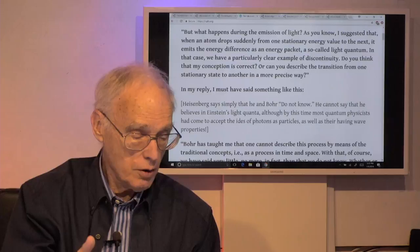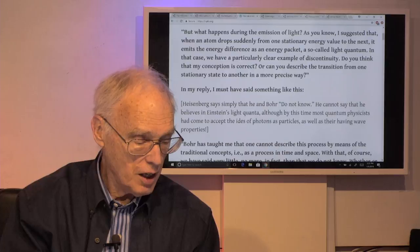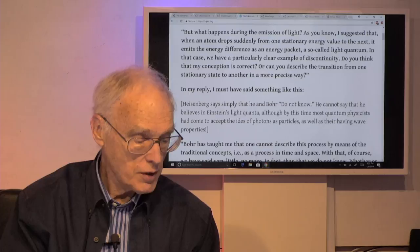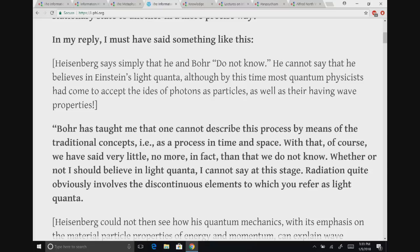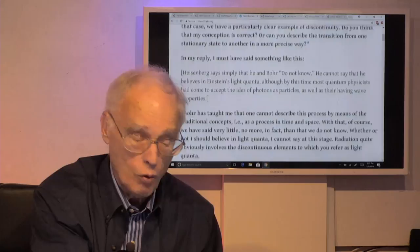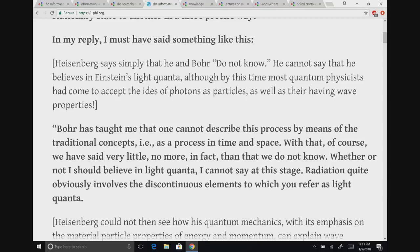Here's Heisenberg's reply: 'In my reply, I must have said something like this.' I have a parenthetical note that Heisenberg is going to simply say that he and Bohr 'don't know' — he can't say he believes in Einstein's light quanta. Although by this time most quantum physicists had come to accept the idea of photons as particles as well as having wave properties, that will be the stumbling block for Heisenberg. Heisenberg replies: 'Bohr has taught me that one cannot describe this process by means of traditional concepts — that is, as a process in time and space. With that, of course, we've said very little. No more, in fact, than that we do not know.'